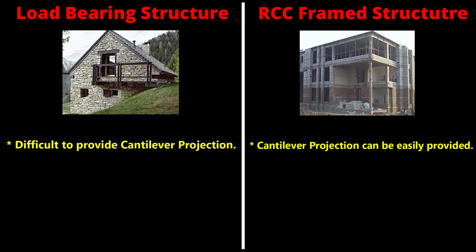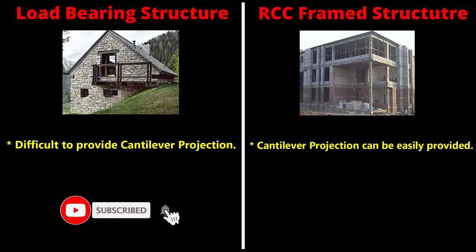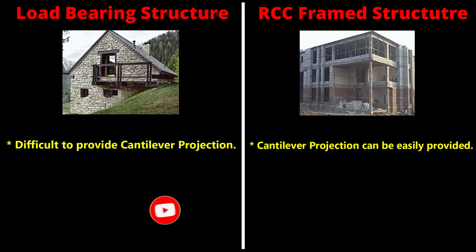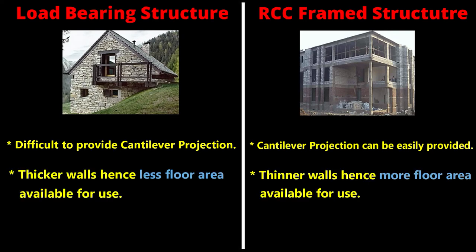If a cantilever projection is needed, it is difficult in a load bearing structure and is permitted only up to a short span. In an RCC framed structure, cantilever projections can be easily provided. Additionally, since all load bearing walls are thicker, less floor area is available for use, whereas in RCC frame structures the walls are thinner, so more floor area is available.